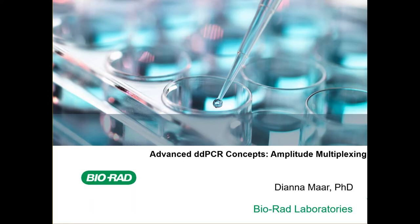Amplitude multiplexing is one of three easy multiplexing strategies that is used to expand the number of assays that can be added to a well when using ddPCR.